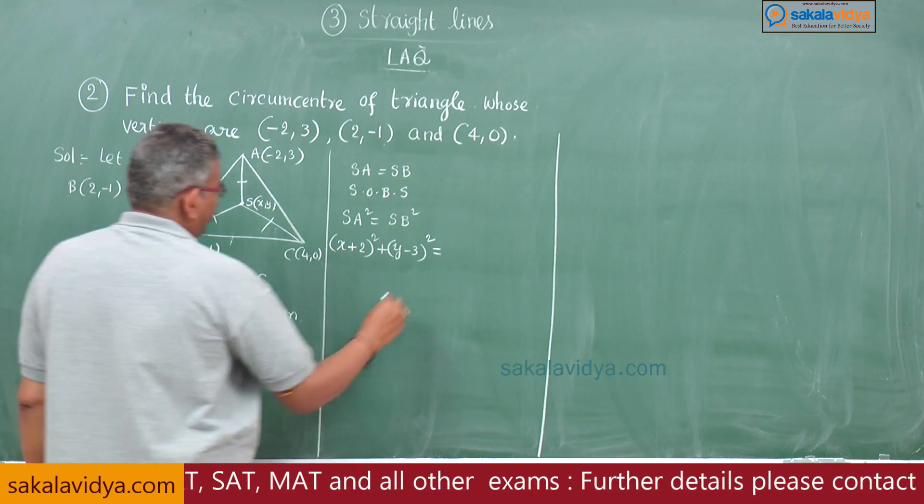SA² means (x+2)² + (y-3)². SB² is (x-2)² + (y+1)². Let us simplify: x² + 4x + 4 + y² - 6y + 9 = x² - 4x + 4 + y² + 2y + 1. Check it.